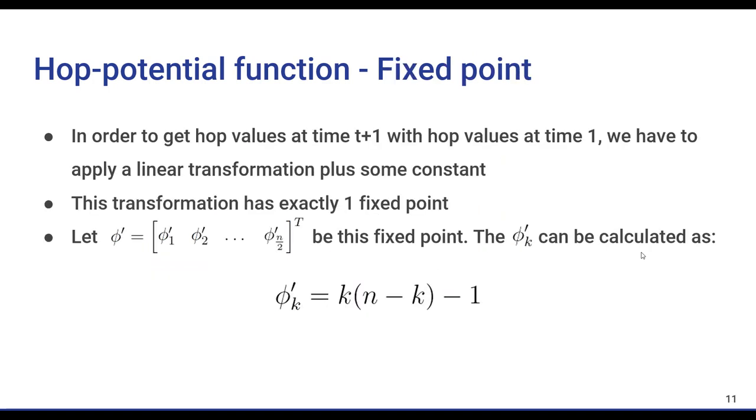By doing some calculations, it can be shown that the previous transformation has exactly one fixed point. If we name that fixed point phi prime, then the kth value of phi prime will be k times (n - k - 1). This observation helps us immensely, since we will use this to prove that our expected k hop function values converge to these values as the number of balls increases.